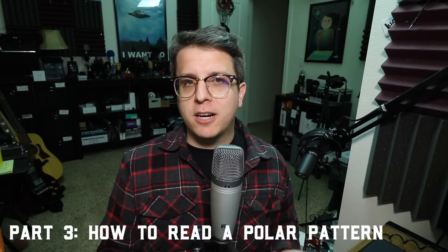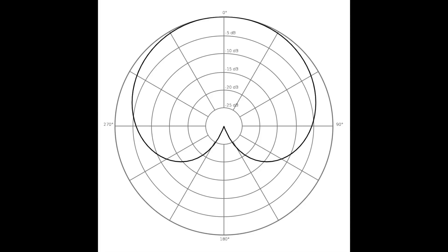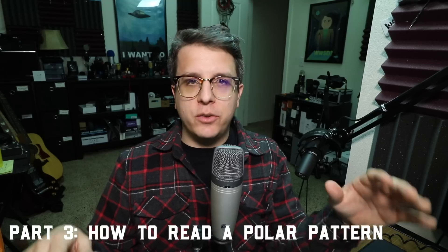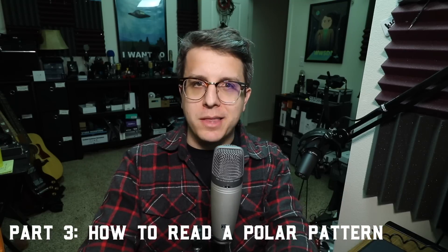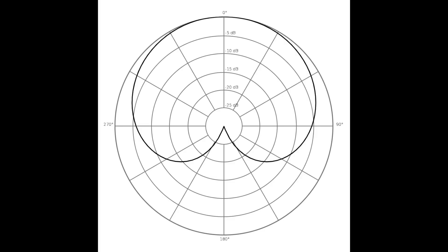If you've been shopping for a microphone, you've undoubtedly seen polar pattern specification sheets, so let's talk about how to read them. First, we need to understand where we are in relationship to this diagram. At zero degrees, up here at the top of the screen, is the very front of the microphone, and 180 degrees at the bottom is the rear side. This dark shape on the screen indicates the actual polar pattern of the microphone.